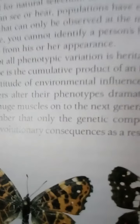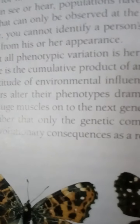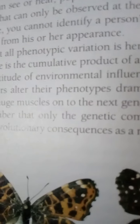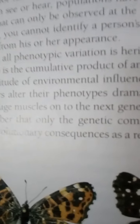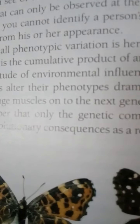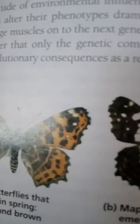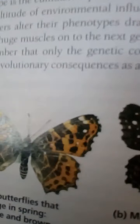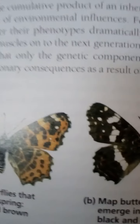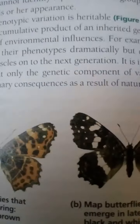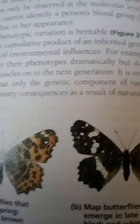Individual variation occurs in a population of all species. Although most people are very conscious of human diversity, we are generally less attentive to individuality in other organisms. But variations are always present, and as Darwin realized, variations that are heritable are the raw material for natural selection. In addition to the differences that we can see, populations have extensive genetic variation that can only be detected at the molecular level.